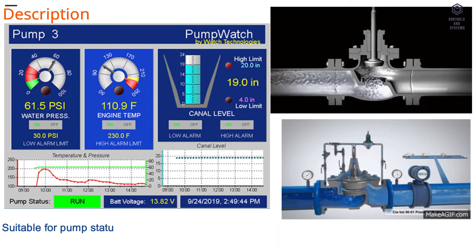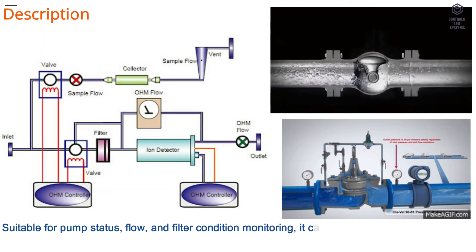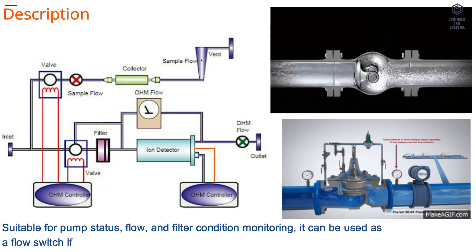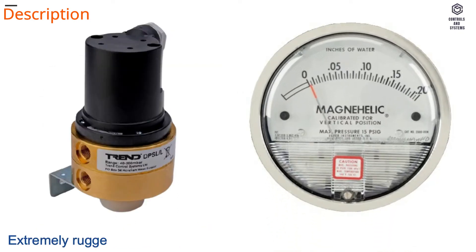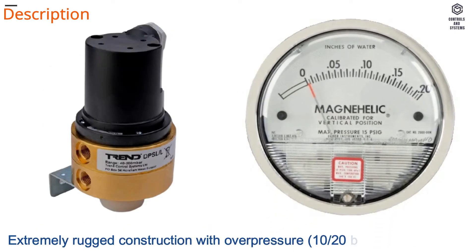Suitable for pump status, flow, and filter condition monitoring, it can be used as a flow switch if fitted across an orifice plate. Extremely rugged construction with overpressure 1020 bar safety margin.